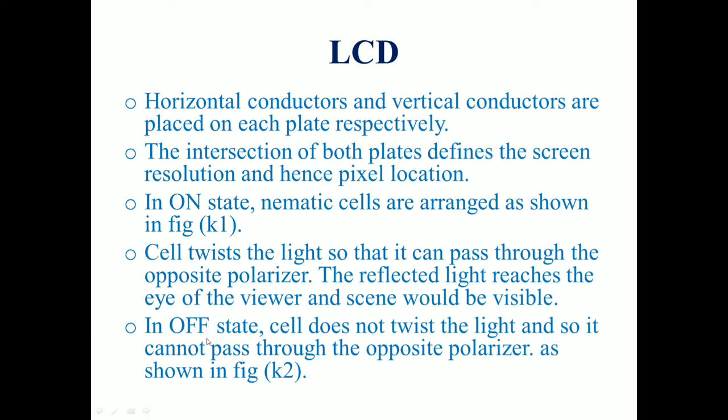In the off state, the cell does not twist the light, and so it cannot pass through the opposite polarizer. The light is blocked and the pixel remains dark.